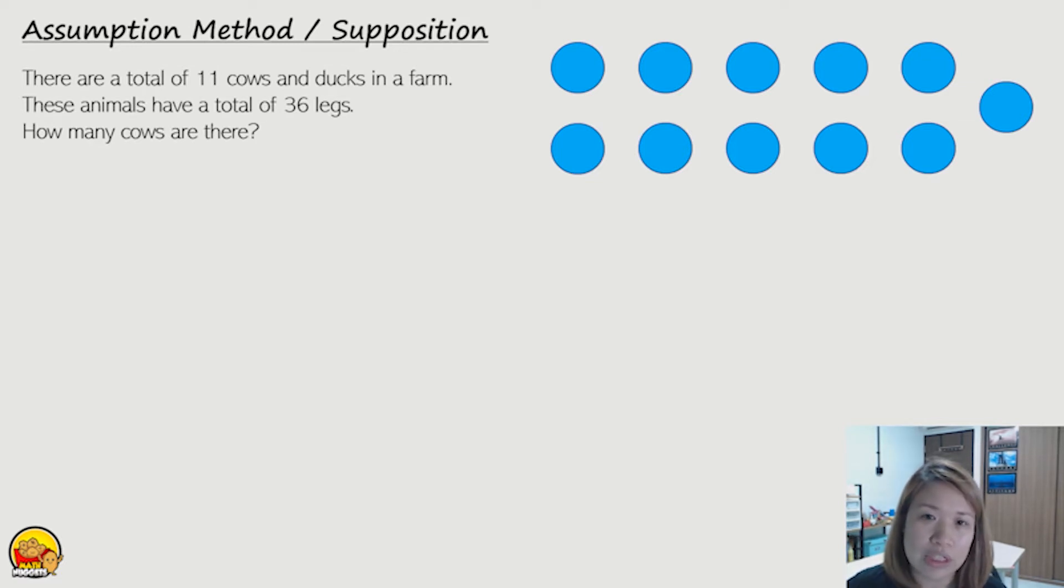Now what are the four steps to solving assumption questions? Firstly, we've got to find out the total. Second step, to find out the extra. Next, find out the difference. And last, we're going to find out the opposite. Okay, so what do I mean?